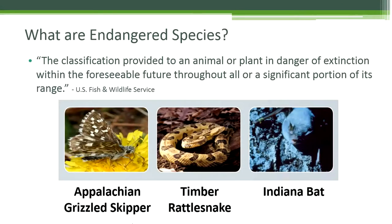Endangered species are defined as an animal or plant in danger of extinction within the foreseeable future throughout all or a significant portion of its range. There are 119 endangered species in Ohio designated by the Ohio Division of Natural Resources. Some of the endangered species in Ohio include the Appalachian grizzled skipper, which is a butterfly, the timber rattlesnake, and the Indiana bat.